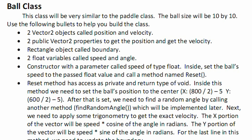Okay, so now this is a ball class, it is very similar to the paddle class. The ball size will be 10 by 10, and use the following bullets to help you build the class. We need two Vector2 objects called position and velocity.